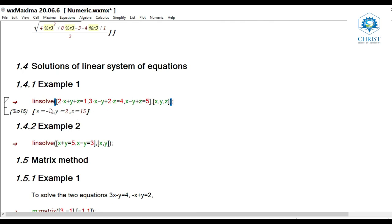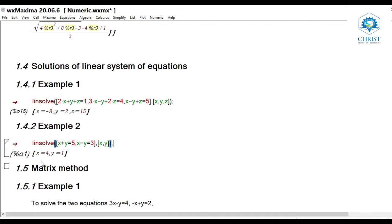Another linsolve example with two equations and two unknowns — which will give a unique solution: linsolve([x + y = 5, x - y = 3], [x, y]) gives x = 4 and y = 1.